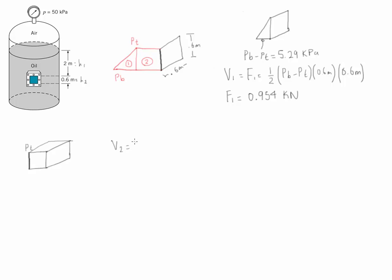So volume 2, which equals F2, is going to be equal to pt times 0.6 meters for the cross-sectional area of this rectangle, times the width which is also 0.6 meters. Calculating the values, this force is equal to 24.4 kilonewtons.